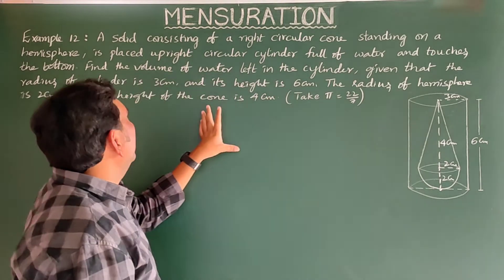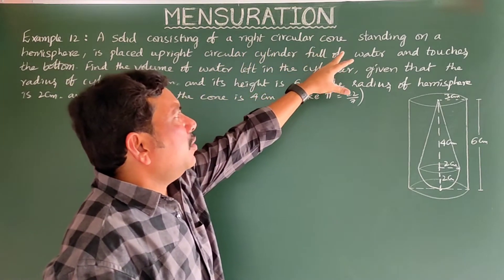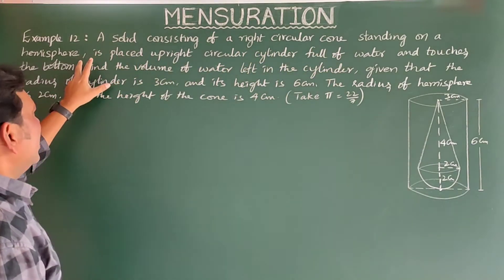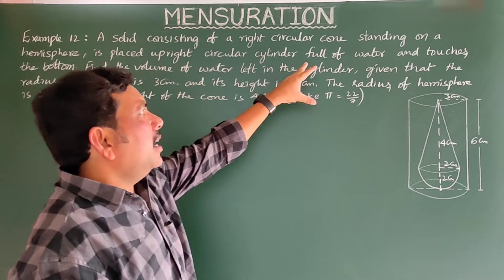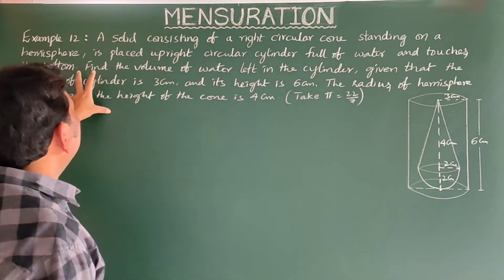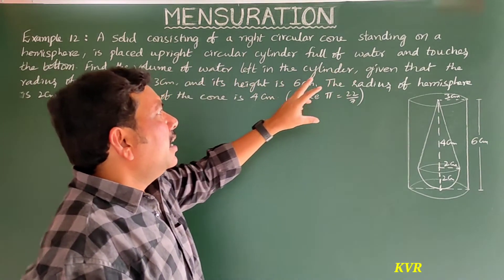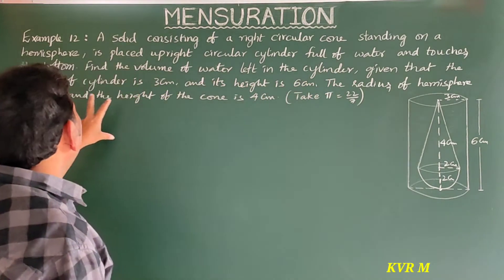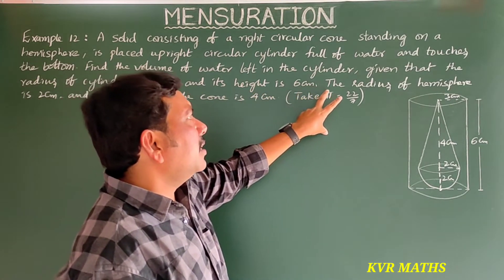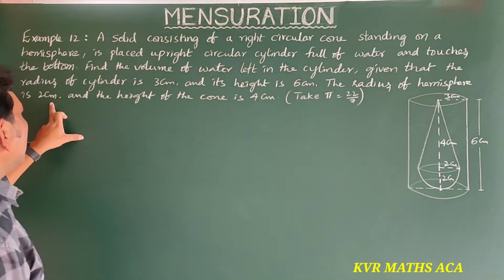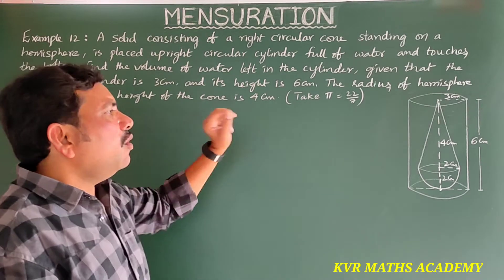A solid consisting of a right circular cone standing on a hemisphere is placed in an upright circular cylinder full of water and touches the bottom. Find the volume of water left in the cylinder. Given that the radius of the cylinder is 3 cm and its height is 6 cm. The radius of the hemisphere is 2 cm and the height of the cone is 4 cm.